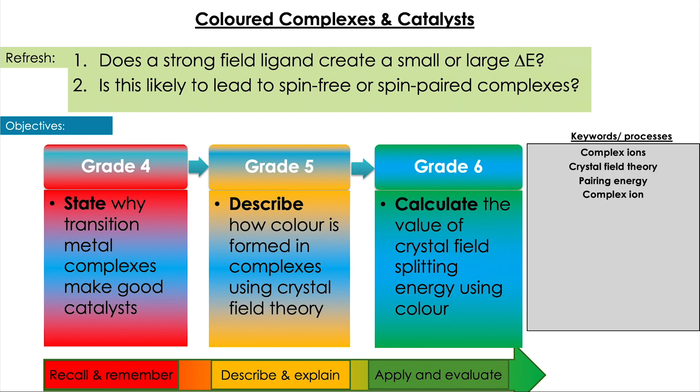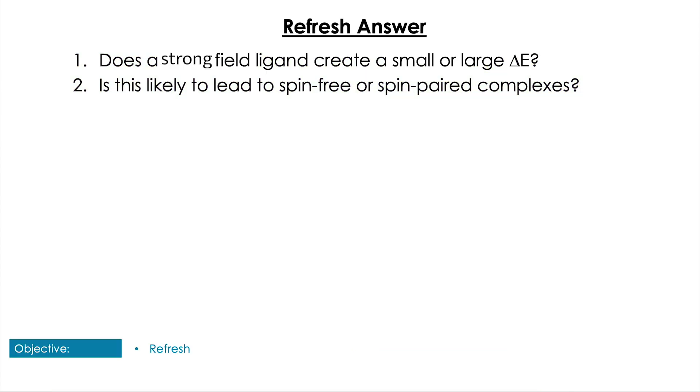So for this one, if we have a strong field ligand, we know a strong field ligand is going to be highly attracted to the central metal ion, and so it's going to push through those high energy d orbitals, creating a large repulsion.